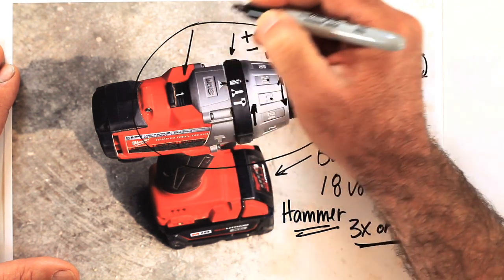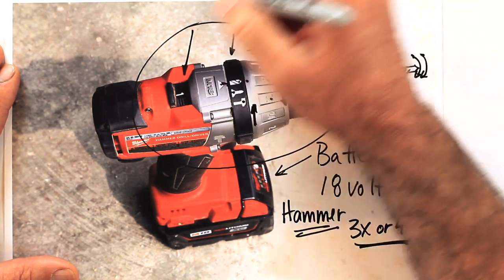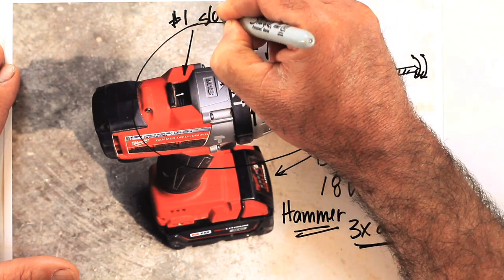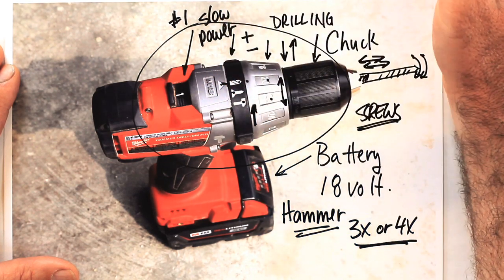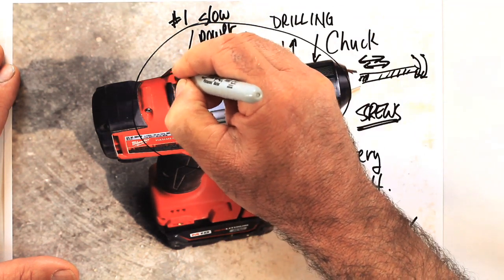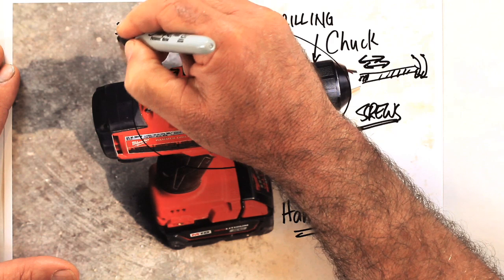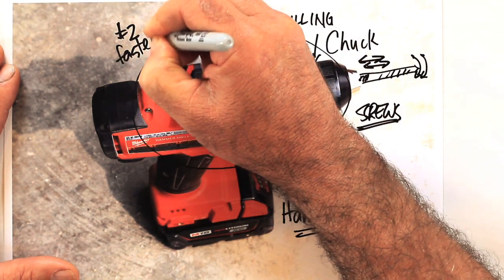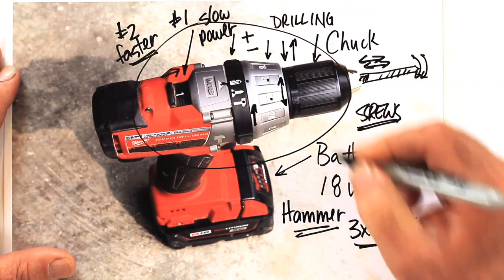Now here you have the slide gear shift. It's in the number one position now. And that almost always means a slow speed, relatively slow speed, and lots of power. I can slide that to reveal the number two mark. And that's a faster RPM setting, but with correspondingly less power.